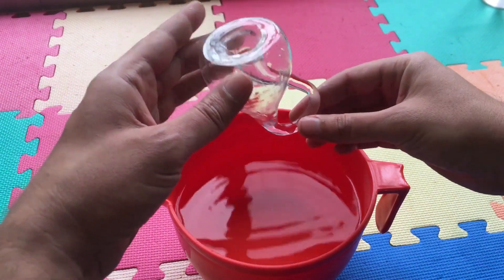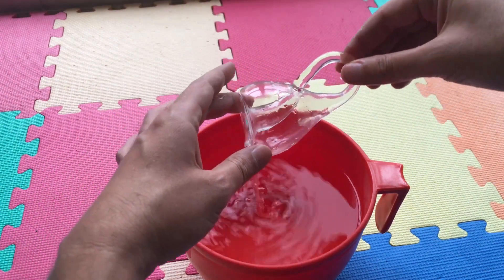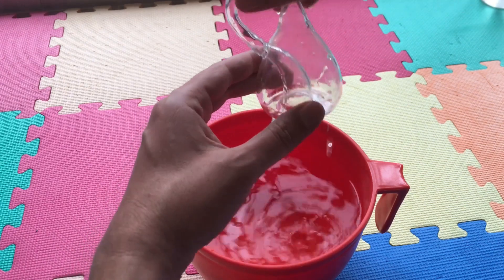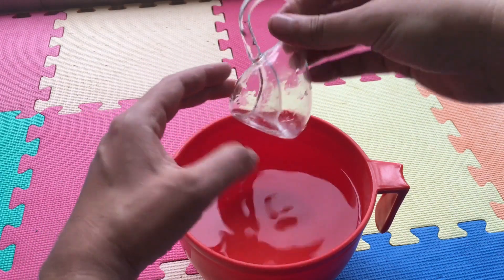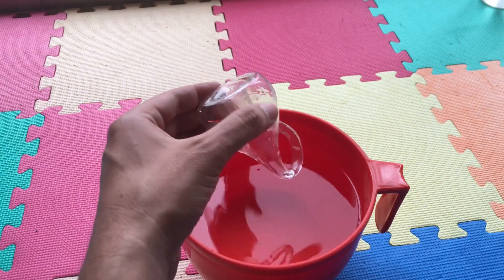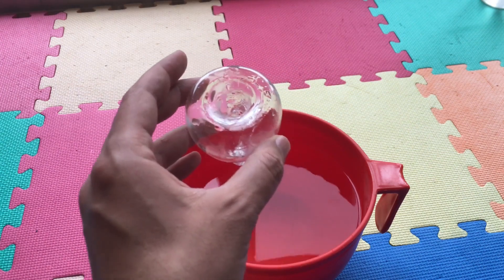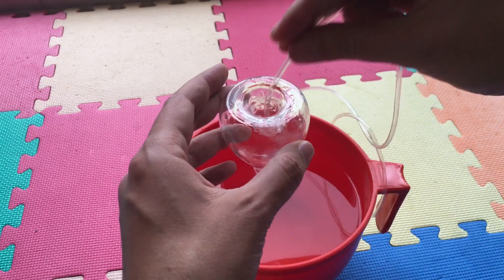One way to fill it is just to turn it around, and every time you turn it around you have some water inside. This can be repeated many times but it's difficult. So we're going to use a tube.